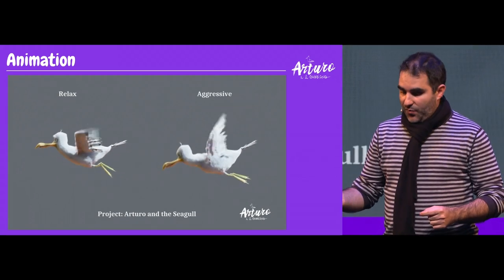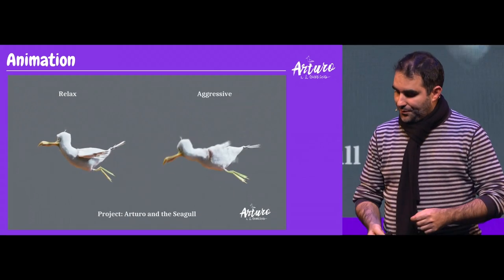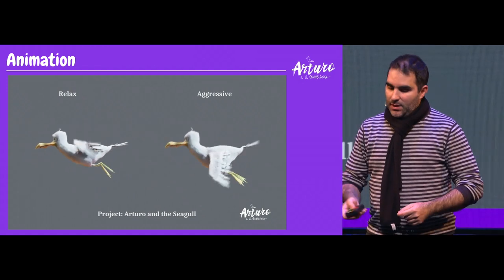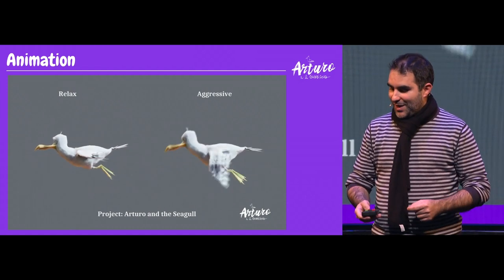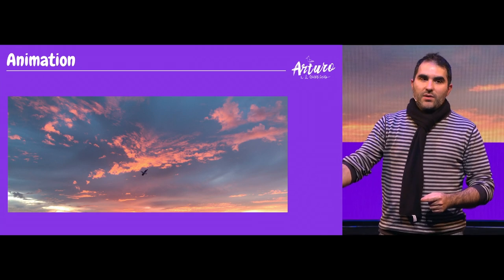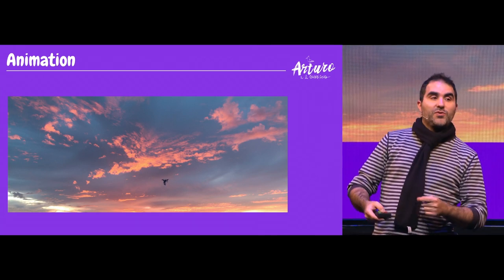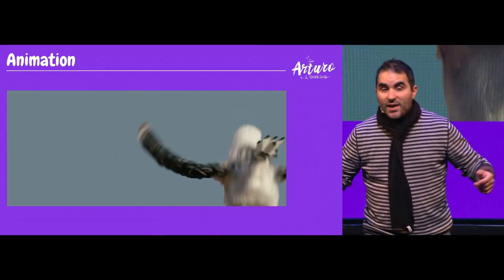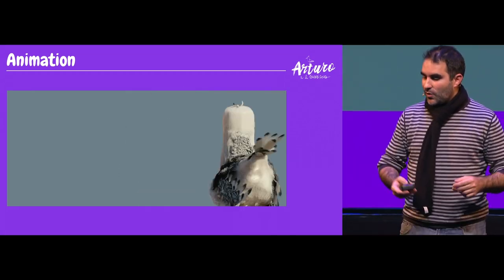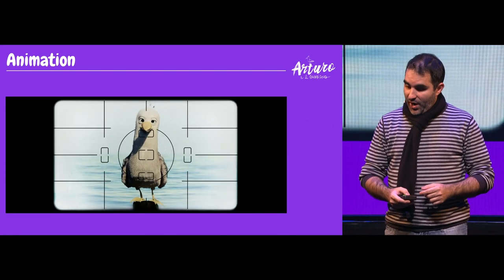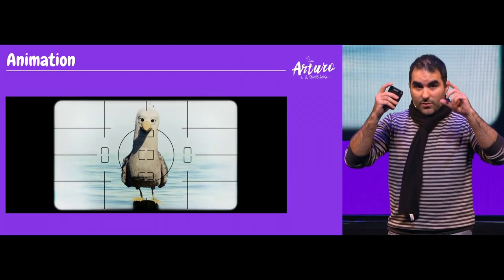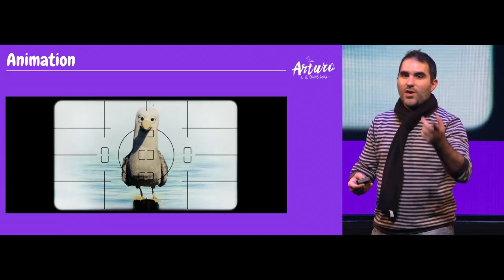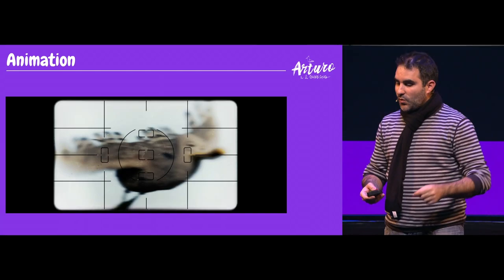Here you can see the difference between the relaxed and more aggressive flight. You can barely notice it, but the relaxed one is when Arturo watches the seagull in the sky for the first time. The other taking-off style — with the head leading — is when the seagull is almost escaping from him. There's a clear shot where Arturo tries to take a picture of the seagull but never can. The seagull is like, 'You cannot catch me, you're not going to take a picture of me.'